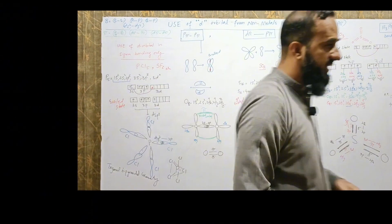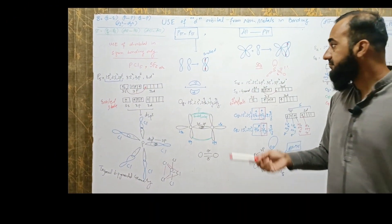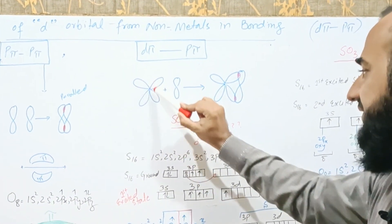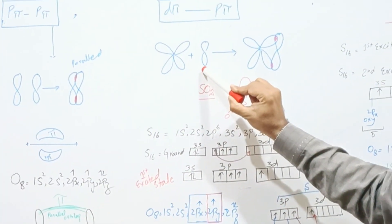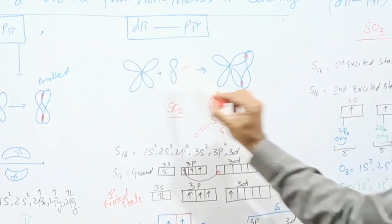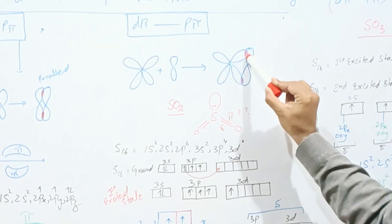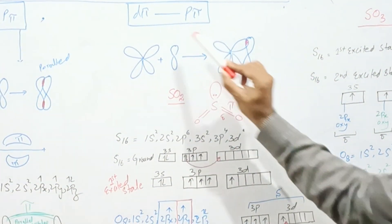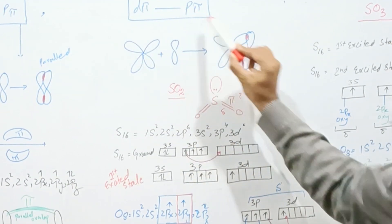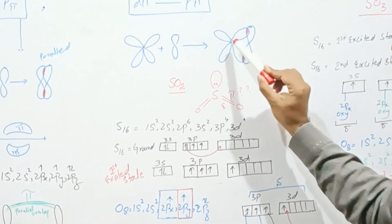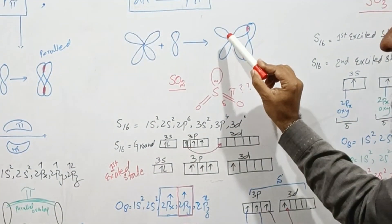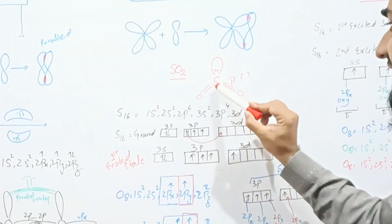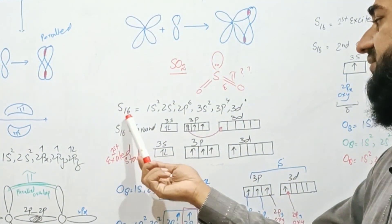In the dπpπ system, the d orbital — which has four lobes — overlaps with the p orbital in a parallel overlap, and this type of overlap is called dπpπ overlap. To explain this overlap we use the example of sulfur dioxide. The atomic number of sulfur is 16 and its configuration in the ground state is given.